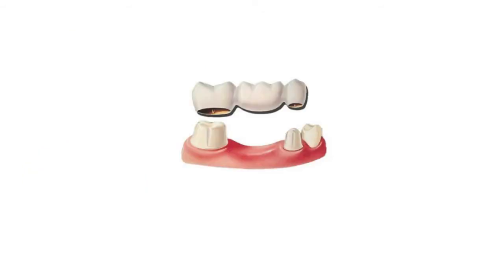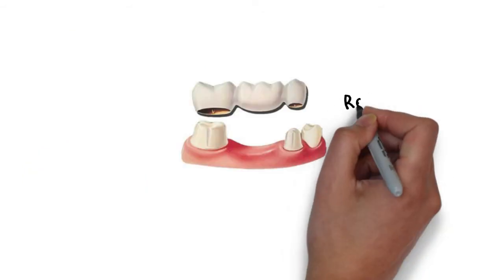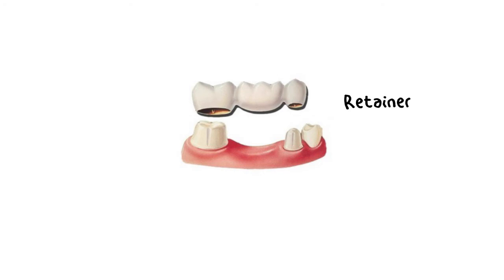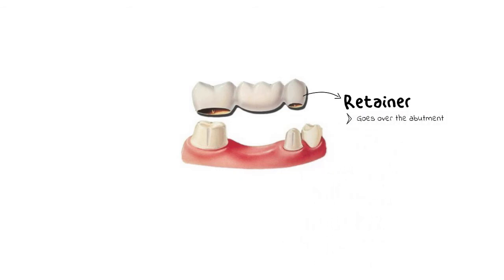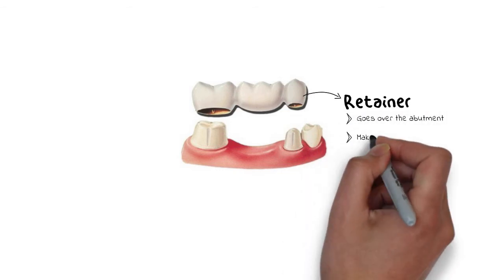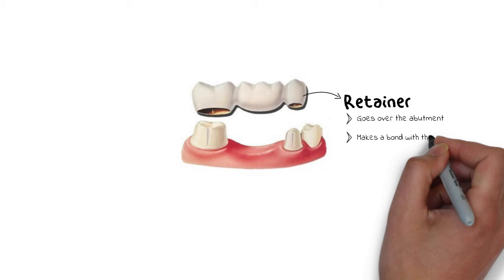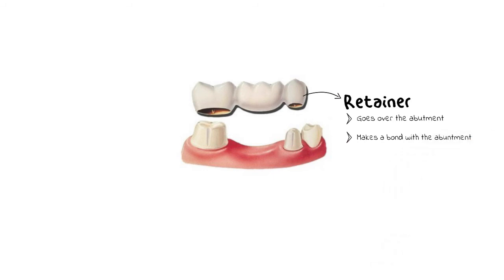The first very crucial part of the actual bridge is a retainer. The retainer is that part of the bridge that is cemented onto the abutment and is responsible for receiving much of the occlusal load being applied onto the bridge. The retainer basically goes over the abutment, makes a stable bond with the already prepared abutment, and provides support to the rest of the bridge.